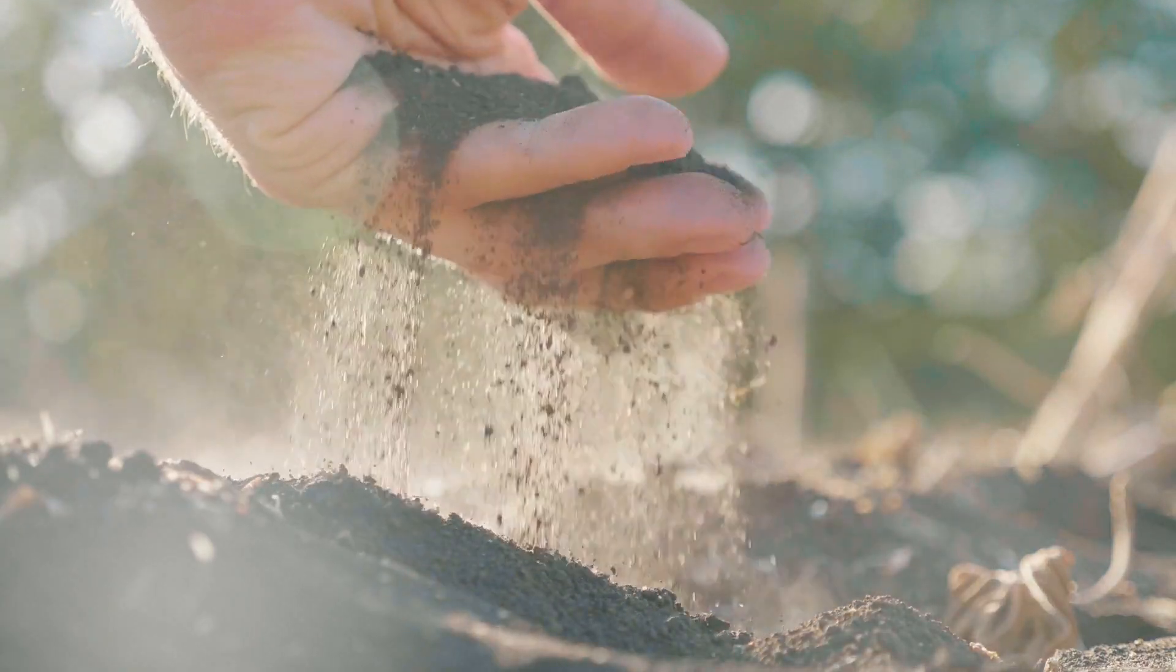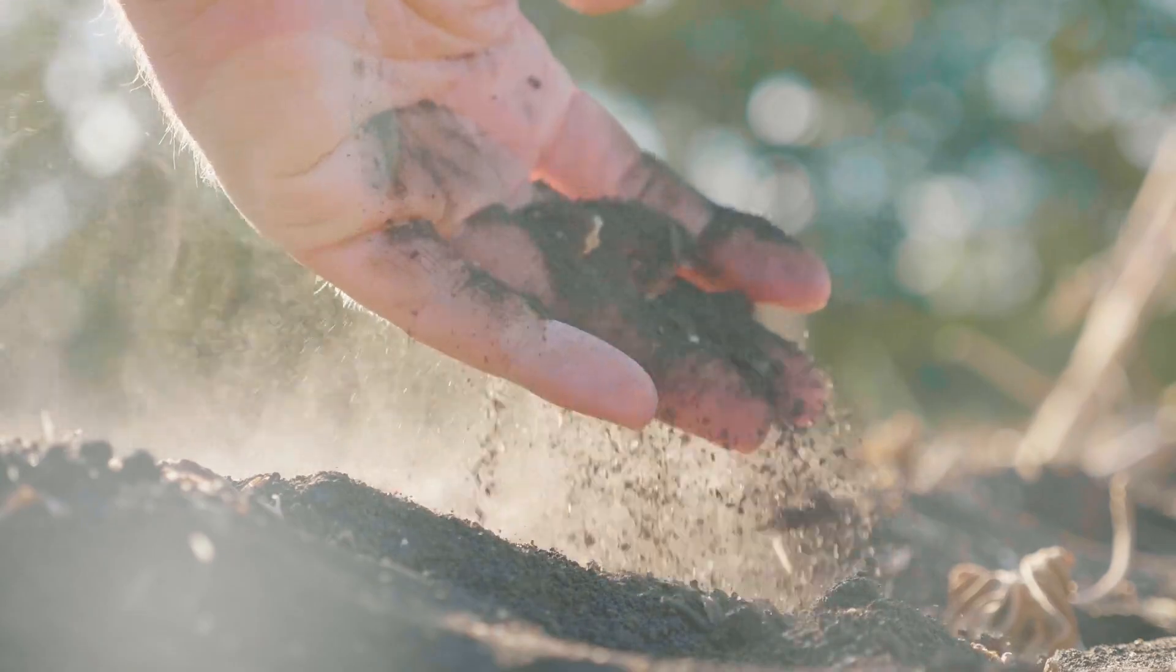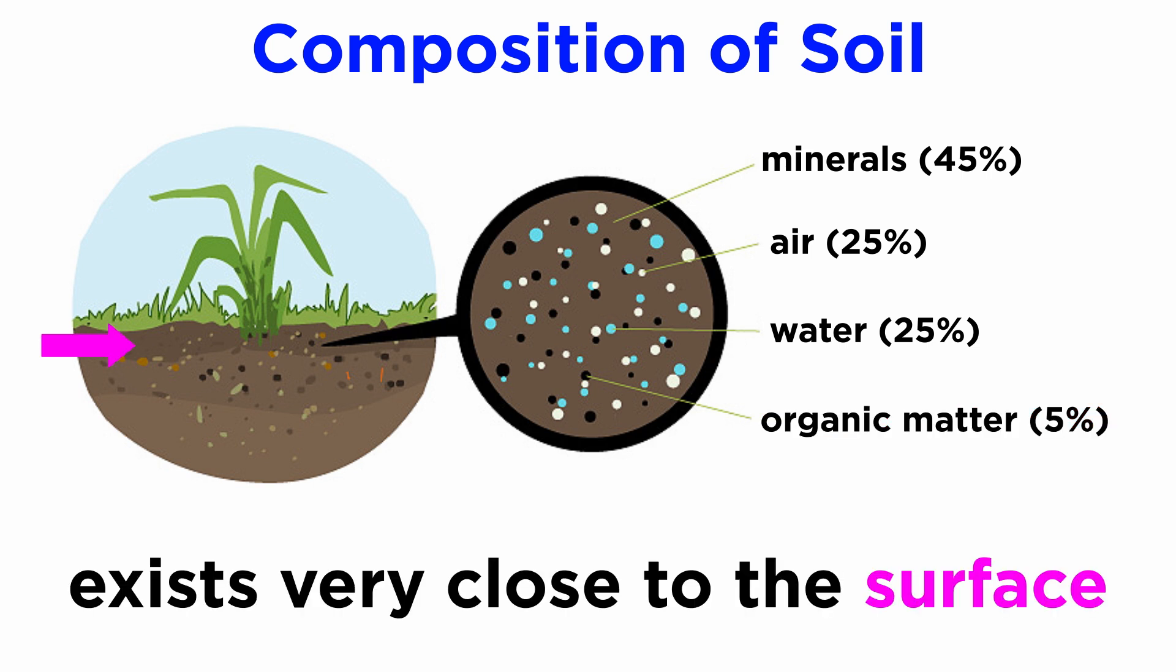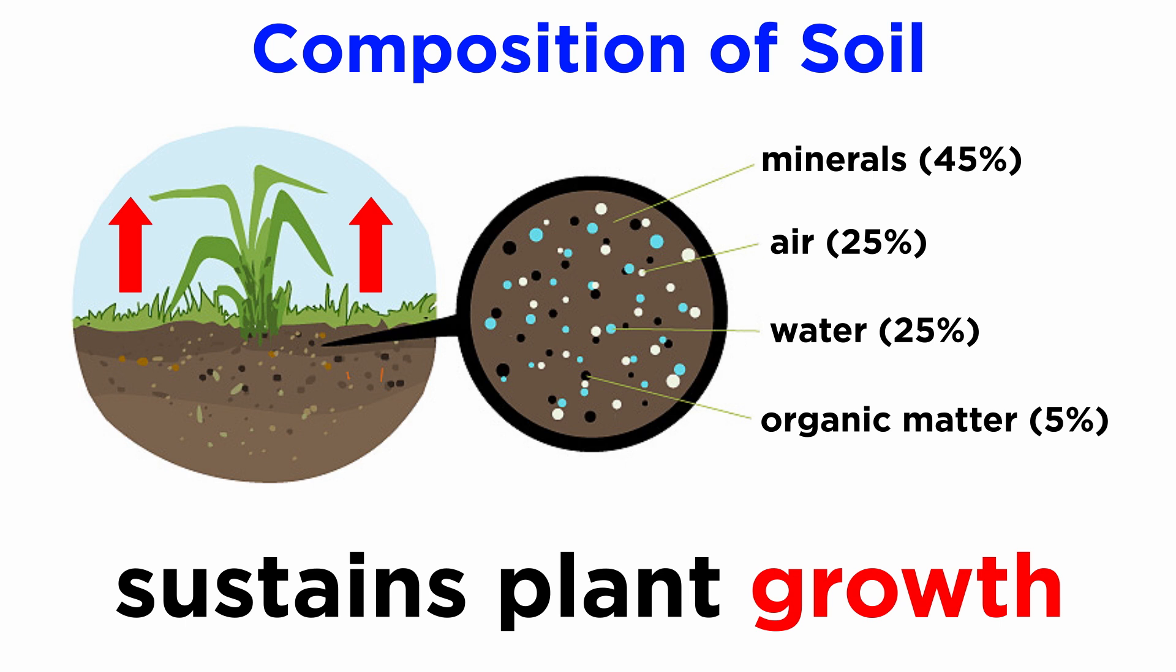Soil is not just loose material that you can run through your fingers. For an ecologist, soil is the material that includes organic matter, lies within the top few tens of centimeters of the surface, and is important in sustaining plant growth.